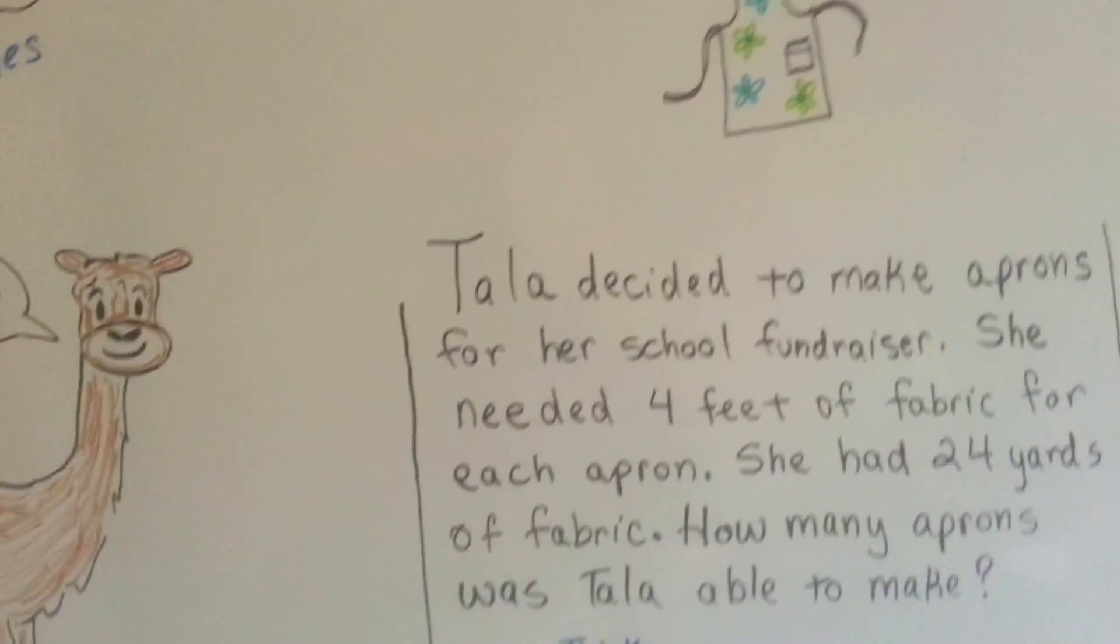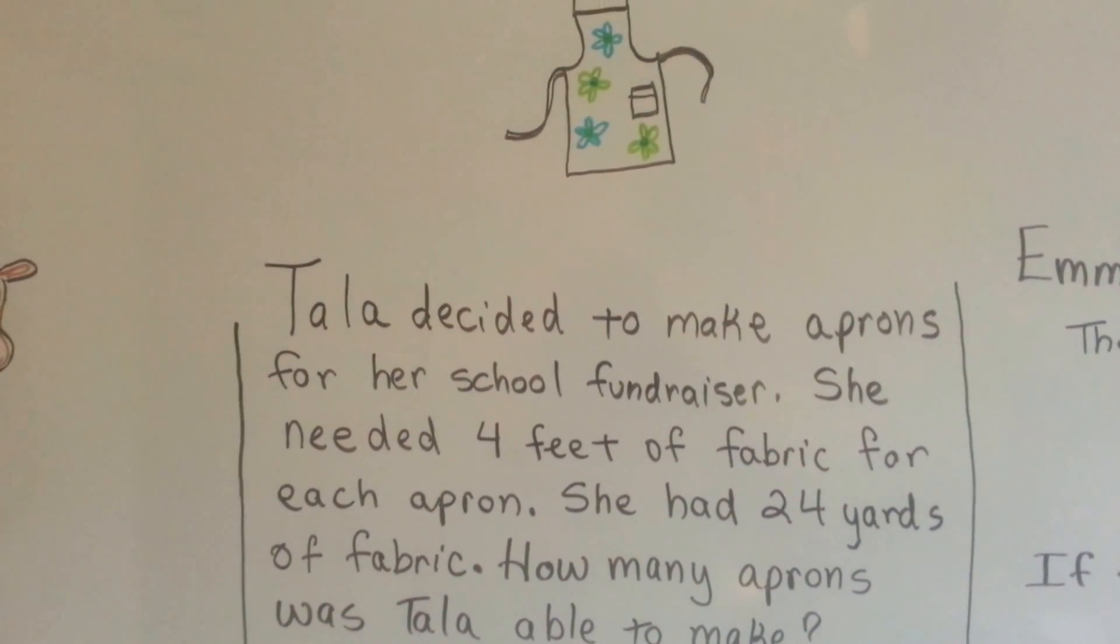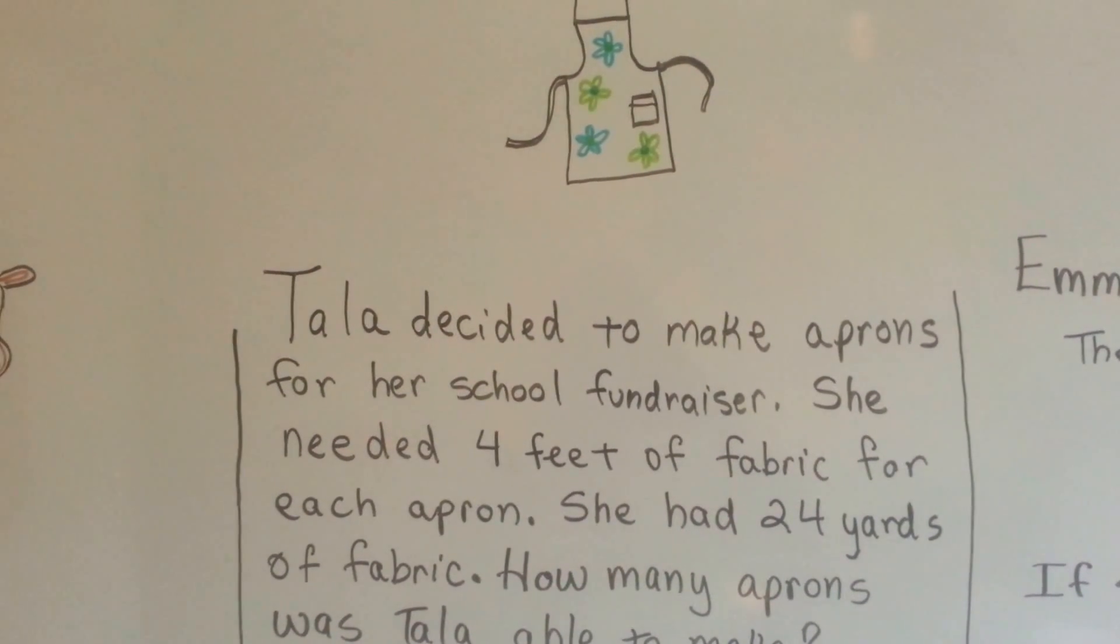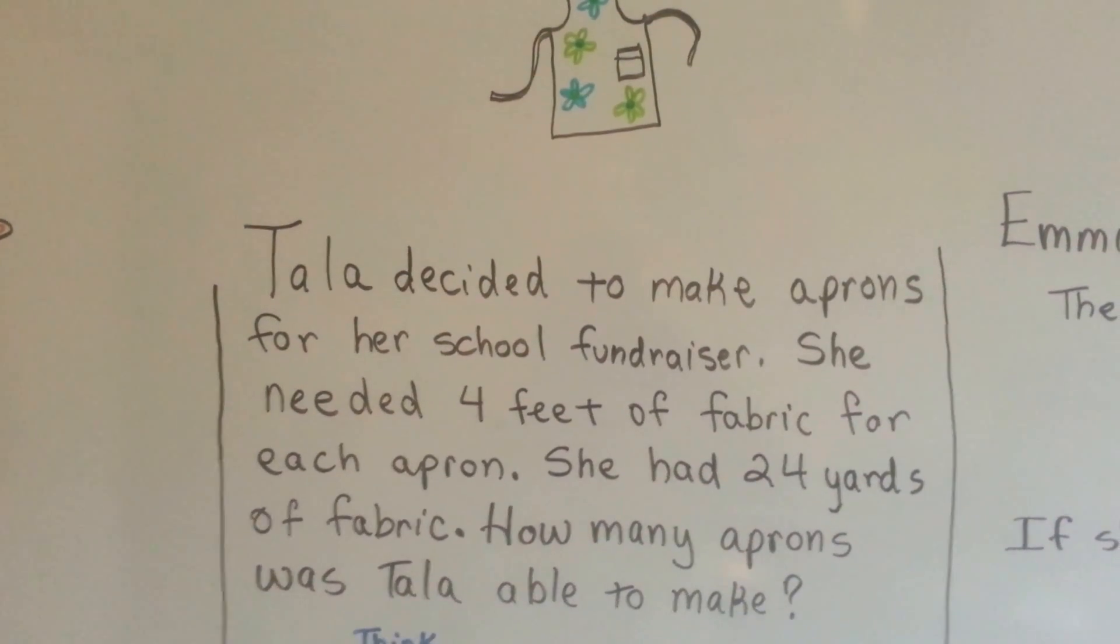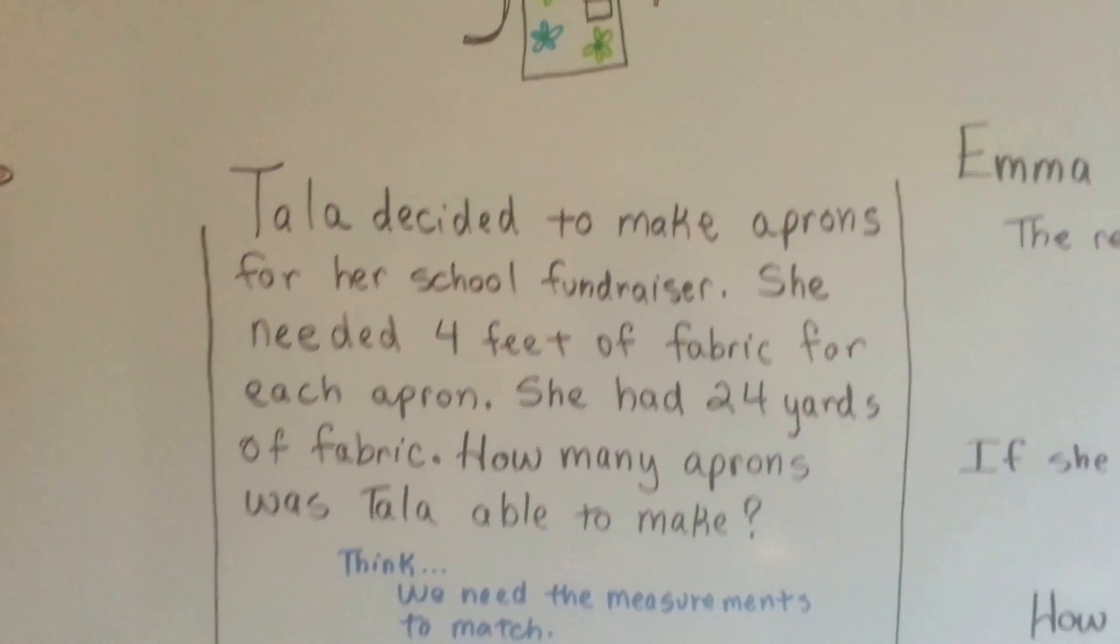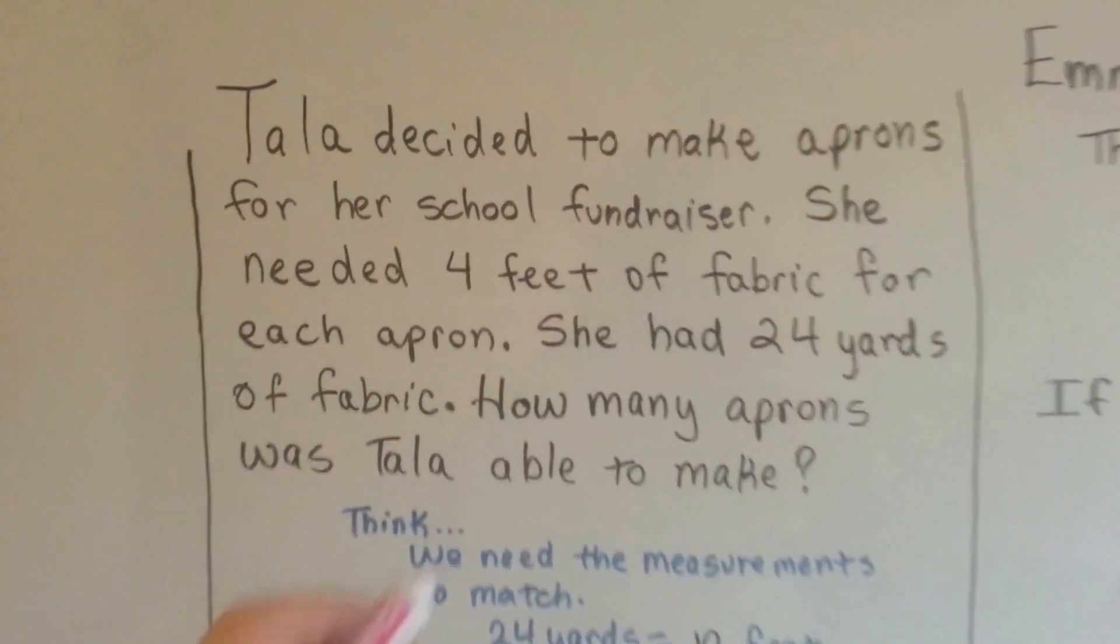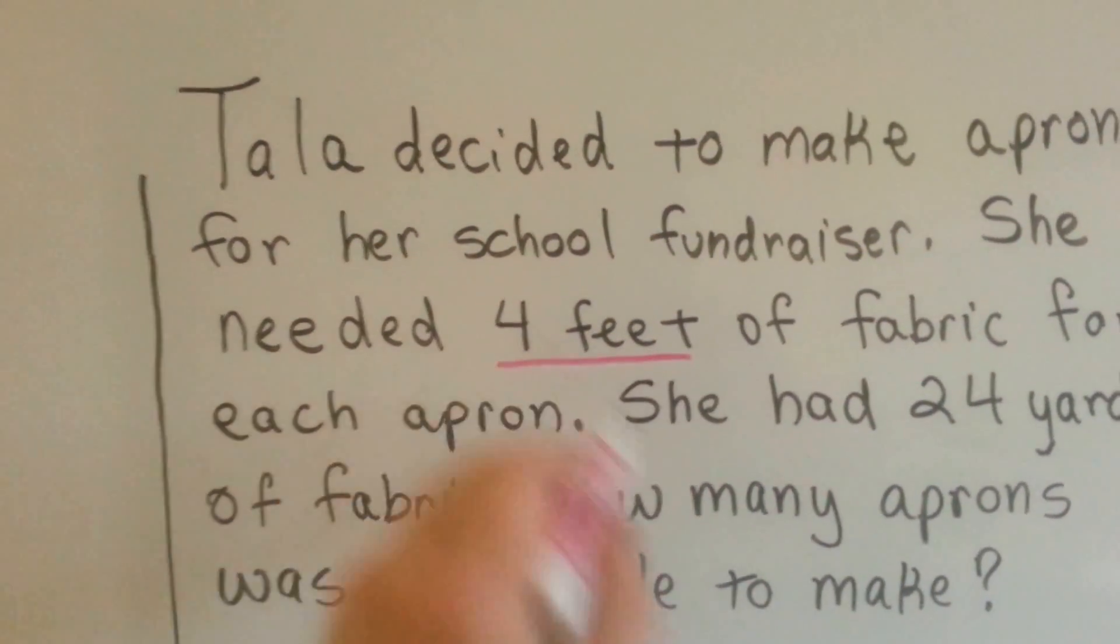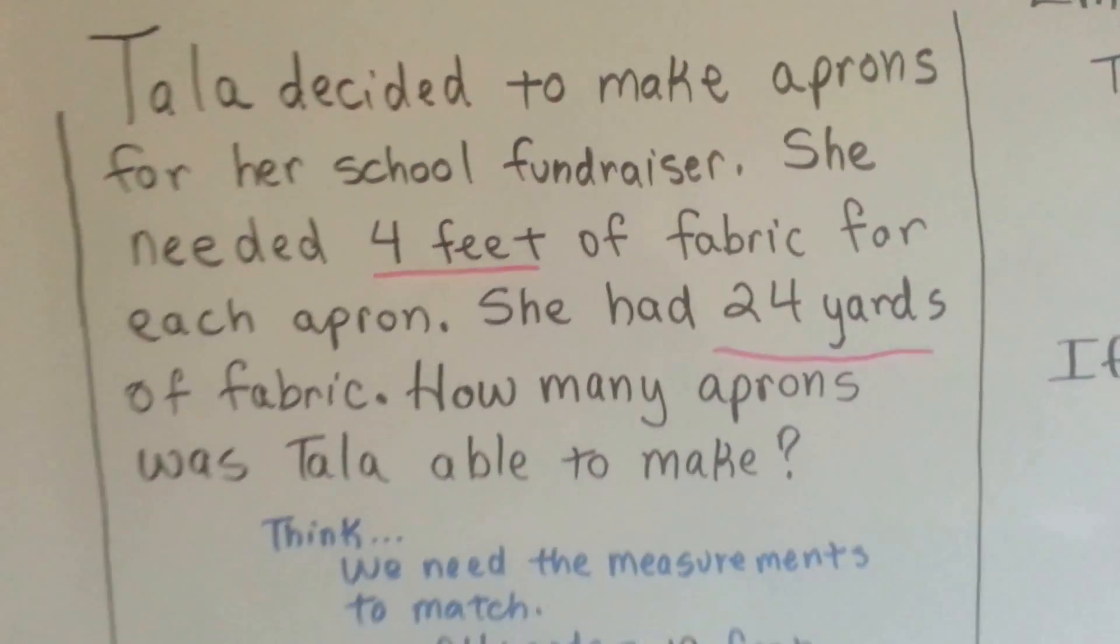Let's see what this one is. Tala decided to make aprons for her school fundraiser. She needed 4 feet of fabric for each apron. She had 24 yards of fabric. How many aprons was Tala able to make? So the first thing we need to think is we need the measurements to match. It takes 4 feet to make one apron, and she has 24 yards.